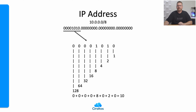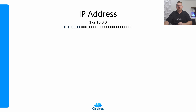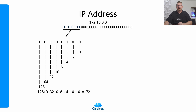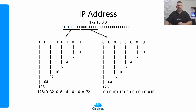This is how all IP addresses work. Another example: 172.16.0.0 would look like this. For the first octet, we need to enable the value positions for 128, 32, 8, and 4 — the total comes to 172. For the second octet, we just have to enable the 16th place to get 16.